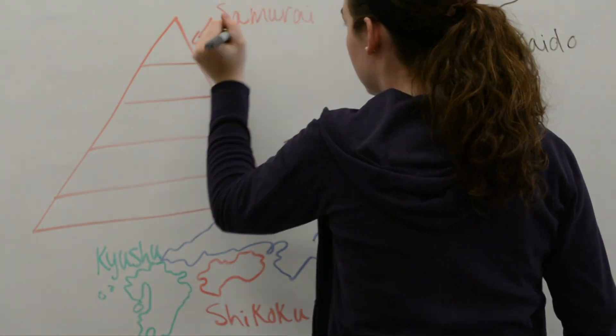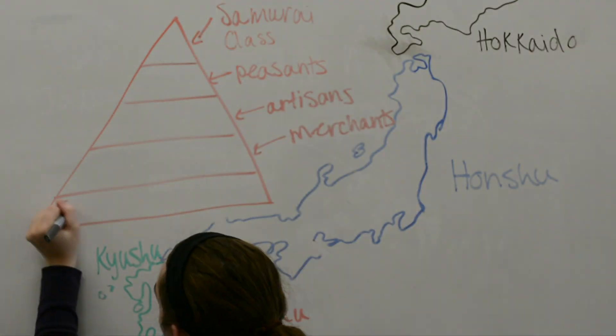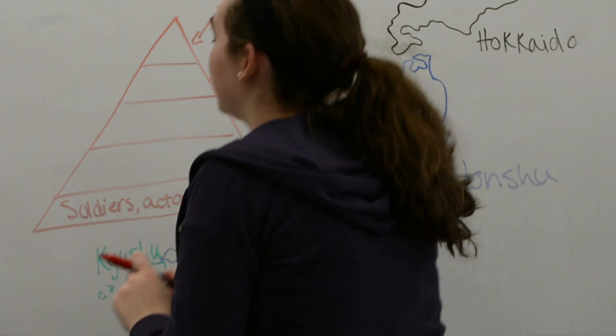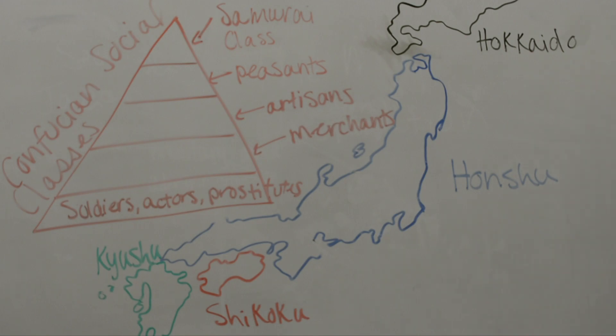At the top of the system are the scholar gentry, followed by the peasants, then artisans, then merchants, and finally, soldiers, actors, and prostitutes.